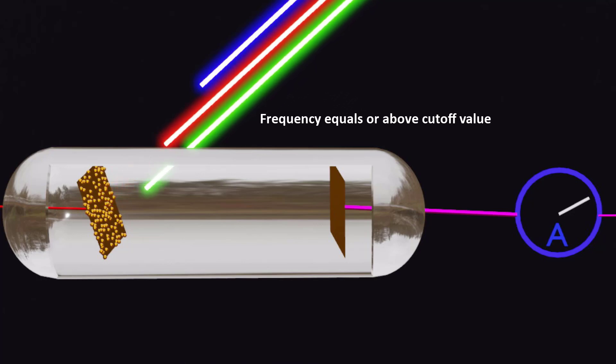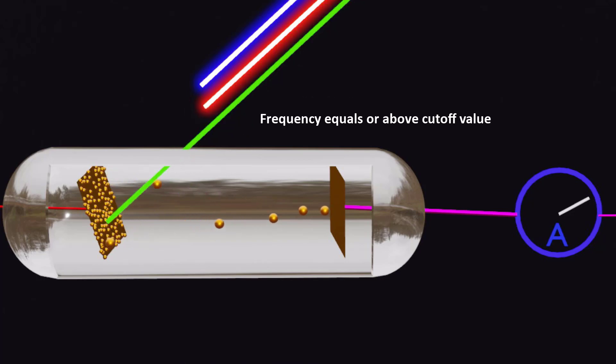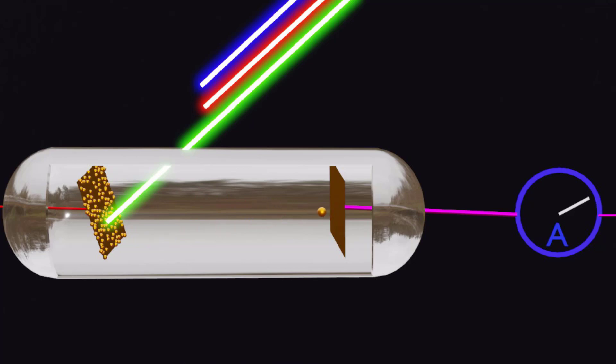Once the frequency of the incident light equals or exceeds the cutoff value, electrons are ejected without any delay, even with low intensity light. This specific frequency is known as the cutoff or threshold frequency, and its precise value varies depending on the type of material involved.